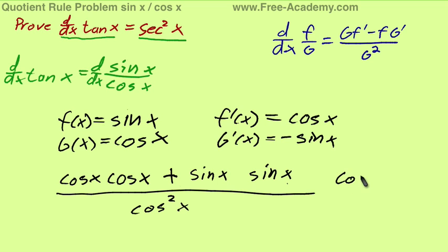Now, of course, this is cosine squared x plus sine squared of x on the top, and that equals 1. Remember that trig identity there. So this gives you 1 over cosine squared of x.